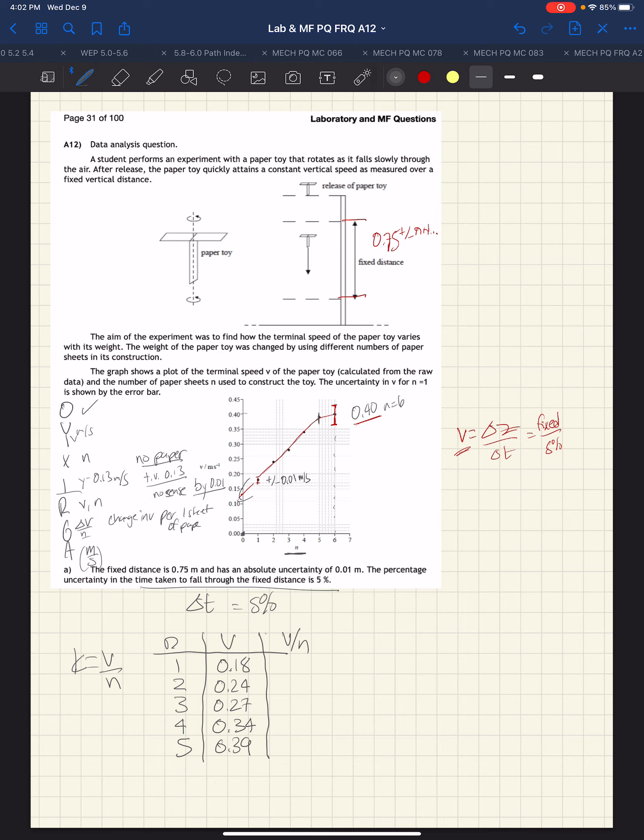When we calculate those values, what we get is 0.18, 0.12, 0.09, 0.085, and 0.08. Now, the ratio should be constant if it's directly proportional, but we can see it's not. In fact, it doesn't just randomly vary, it decreases. v over n decreases with increasing n.